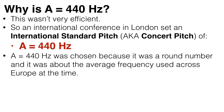This obviously wasn't very efficient. So after a lot of discussion, an international conference in London in 1939 decided that the A above middle C was to be tuned to 440 hertz in all countries from then on. This is known as the international standard pitch, or concert pitch. And 440 hertz was chosen because it was a nice round number and it was about the average frequency used for the note A across Europe at that time.